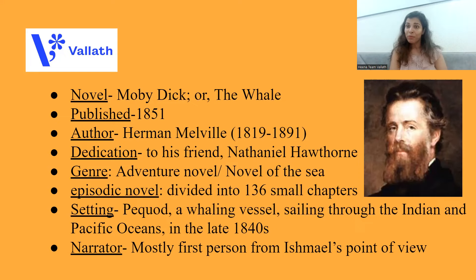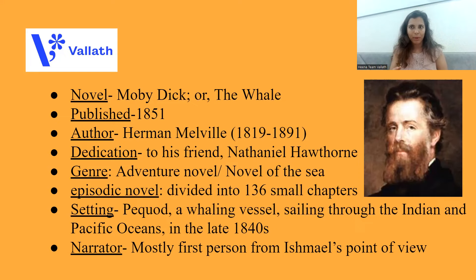Melville has written so many novels of the sea because he himself tried his hand at sailing, becoming a sailor. It is an episodic novel. Why do we call it episodic? Basically, it has 136 small chapters, so each chapter becomes an episode. The setting of this novel is on a ship — the name of that ship is Pequod, which is a whaling vessel.